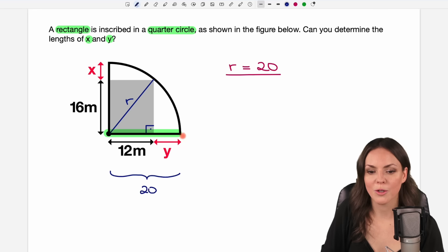So then I also know how long my y is. If this part here is 12 meters, then my y has to be 8 meters, so that I get 20 in total. So my y equals 8.